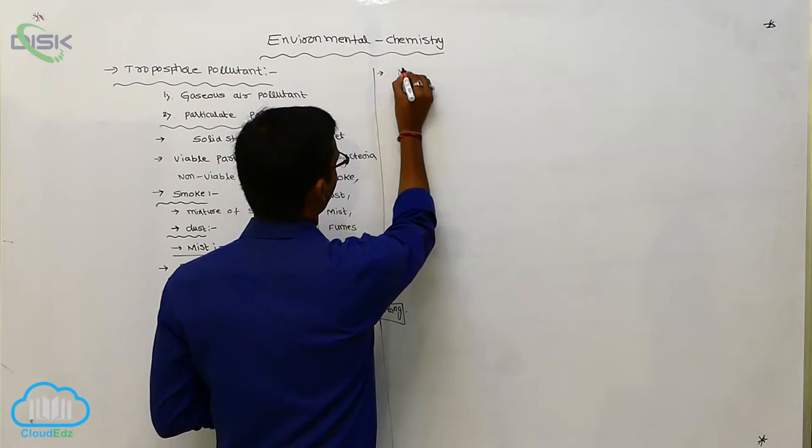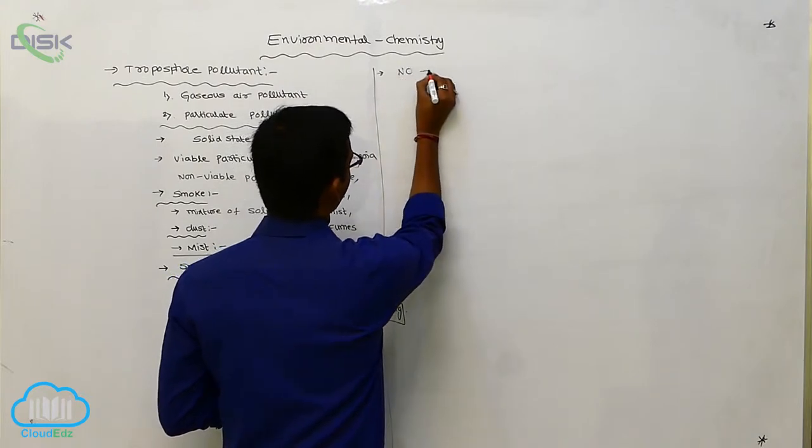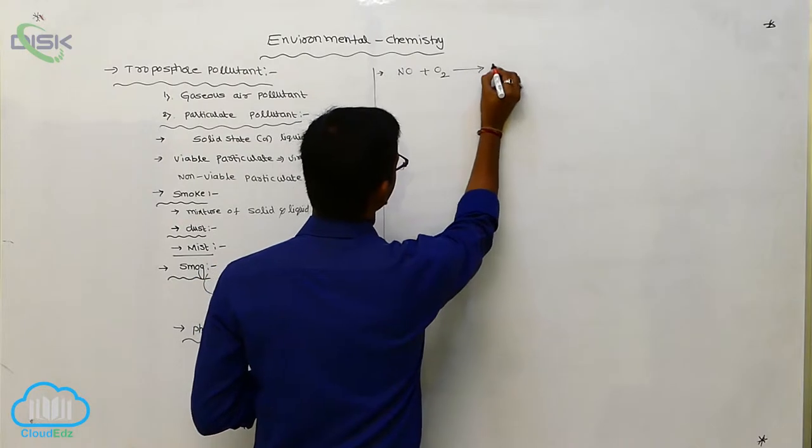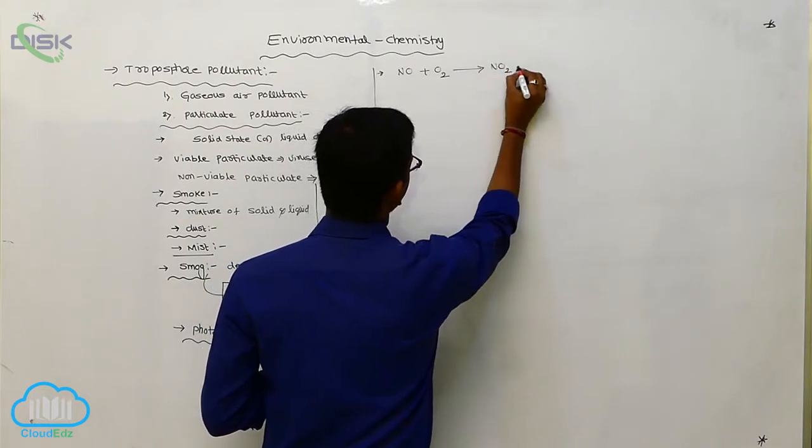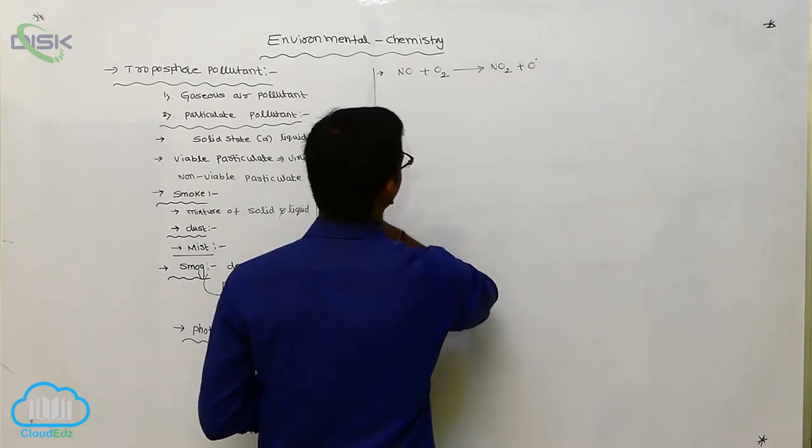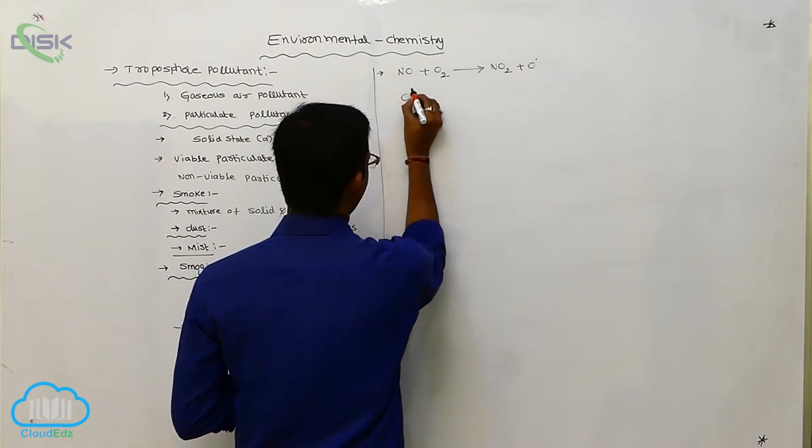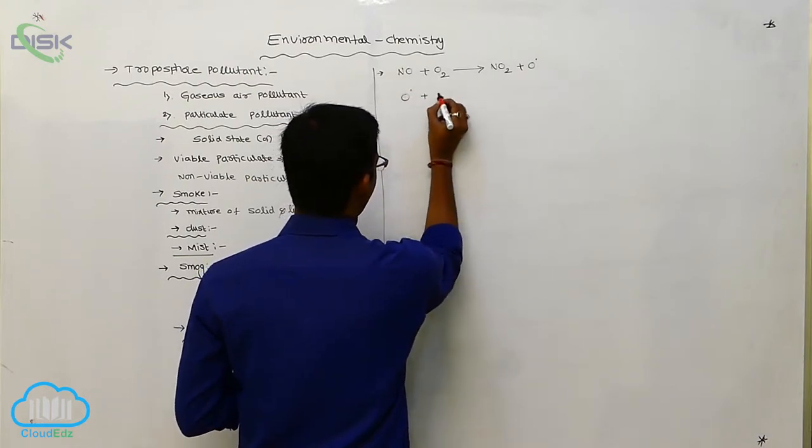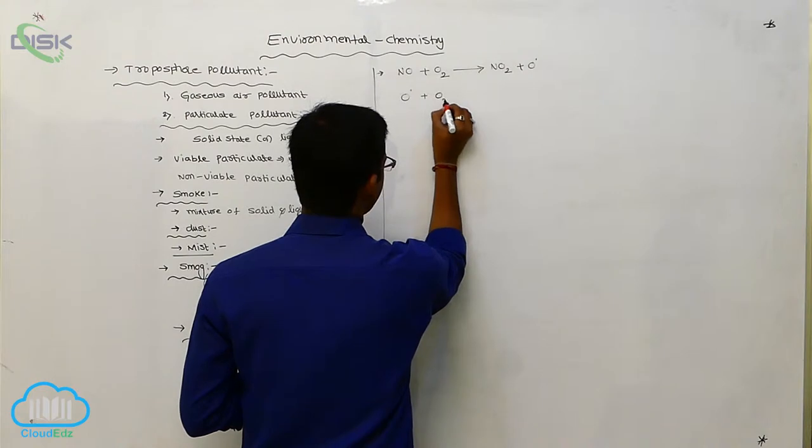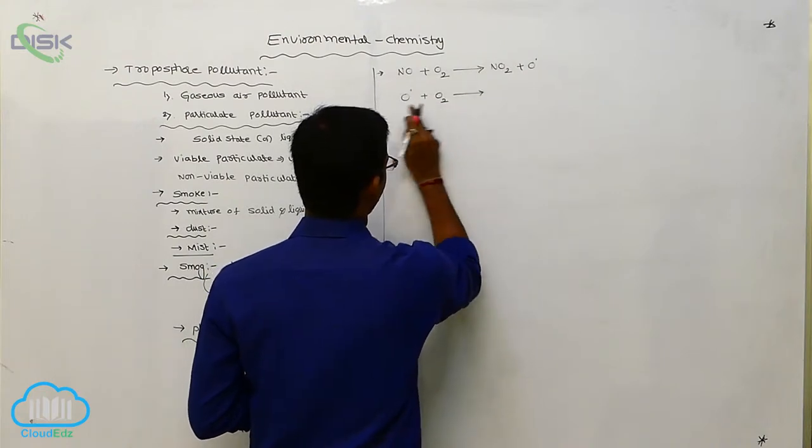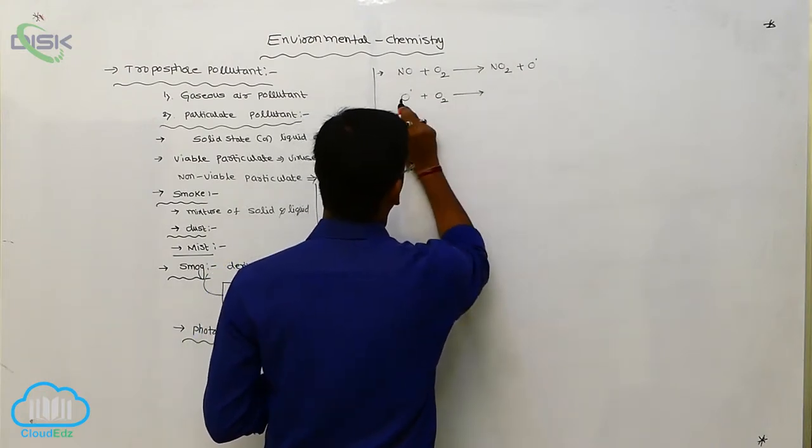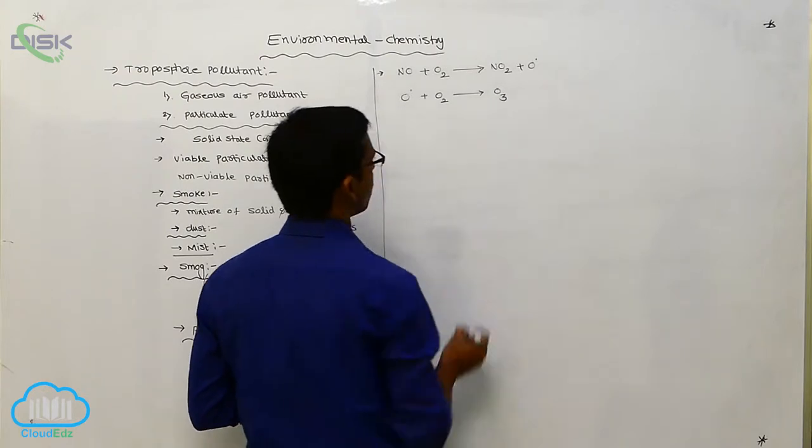NO, okay, this NO is reacted with oxygen, produces NO2 plus oxygen radical. This oxygen radical in the stratosphere, oxygen is there, so that oxygen molecule is reacted with ozone. Oxygen radical, it forms ozone.